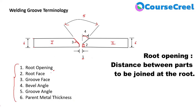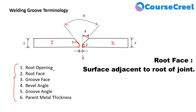Root opening is the shortest distance between both components. This particular opening represents the root opening, defined at the bottommost part of the component. Root opening is defined as the separation between the parts to be joined at the root — the root being the bottommost part. So the opening or distance between both components at the root is represented as the root opening.